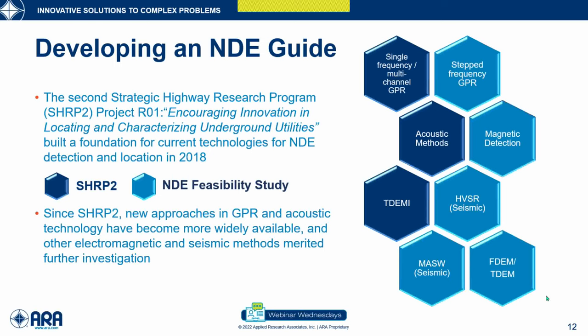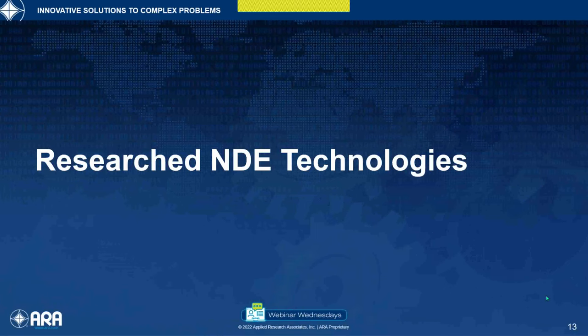Since SHARP 2, new approaches in GPR and acoustic technology have become widely available, and other electromagnetic and scientific methods merited further investigation. All the technologies researched under the Federal Highway contract include ones considered emerging or new relative to SHARP 2, shown in lake blue on the slide.